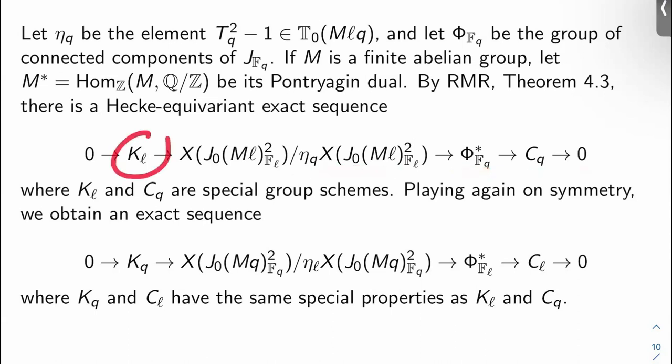0 → K_ℓ → X(J_0(Mℓ)² mod ℓ)/η_q · that → Φ*_{J_q} → C_q → 0. What is K_ℓ? What is C_q? They're special group schemes. They're basically Eisenstein, which means kind of away from the level that we're working at. The Hecke operators, let's say T_q act as q+1, multiplication by q+1, so they're very special group schemes. Okay, again though, we can play on the symmetry between ℓ and q. We should get an exact sequence that's the exact same except for the ℓ's and the q's are switched and of course we get that. Okay, and these the C_ℓ and the K_q that appear here are also Eisenstein.